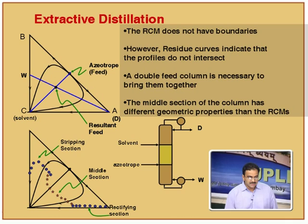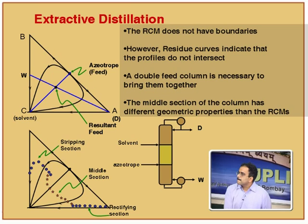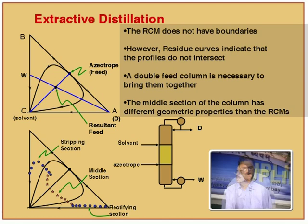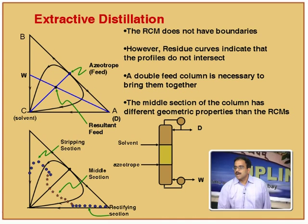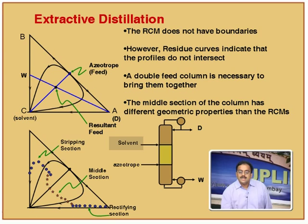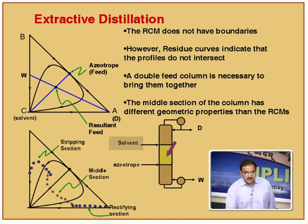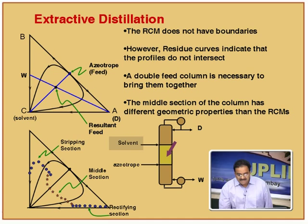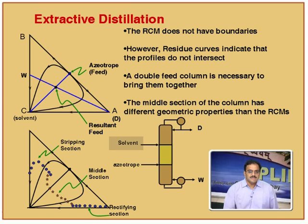You can do this exercise by taking material balance for any stage in the middle section. The middle section equation is different from the rectifying section equation. Remember: extractive distillation cannot be performed with a single feed — you have a double feed. The solvent is high boiling. And you have a middle section. So the moment you see this residue curve map, you should say: I will use this configuration. This is the typical behavior of this residue curve map — there is a connection between the two.